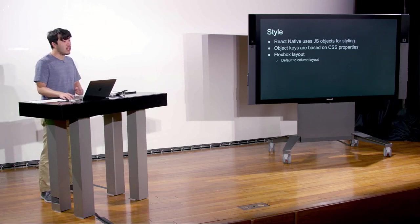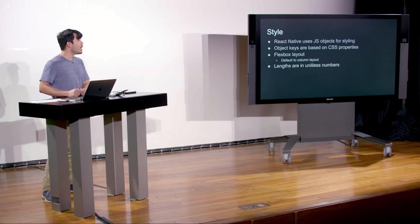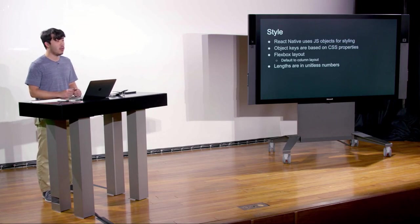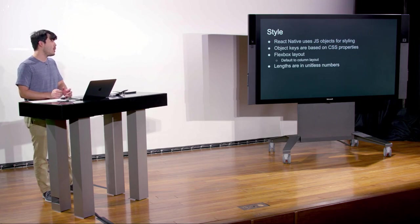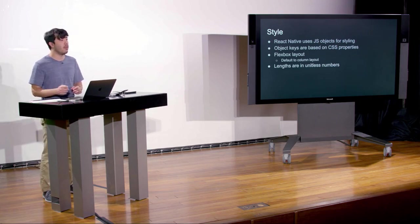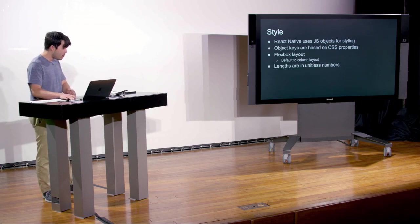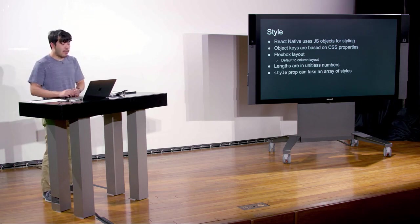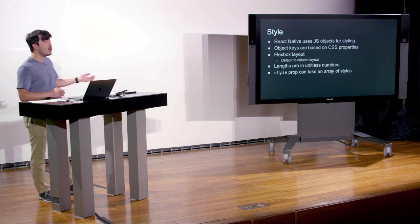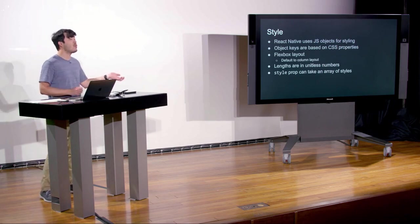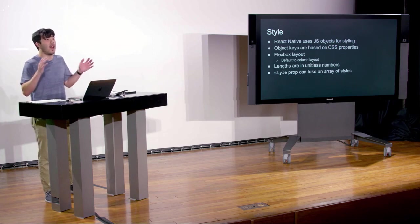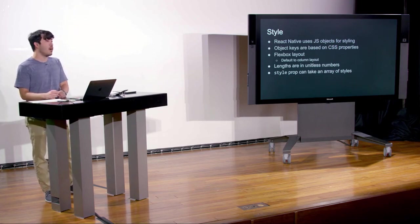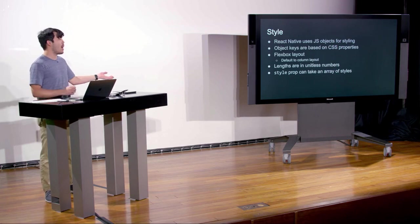In React Web we had pixels or percentages, but in React Native we use unitless numbers for length. This is good because there are so many different devices with different pixel densities — a unitless number lets us abstract that out. The style prop is how you style a given component: you assign a JavaScript object to a style prop, and it can actually take an array of styles. If you wanted multiple class names in React Web, you'd use spaces between them; in React Native you pass an array of styles.